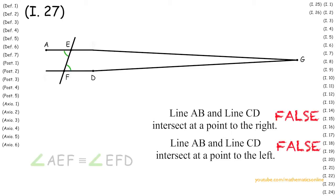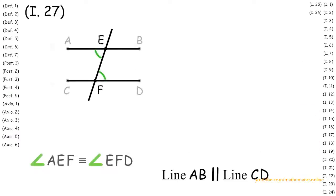Since we proved that line AB and line CD do not intersect at any point, then by definition 7, line AB must be parallel to line CD.